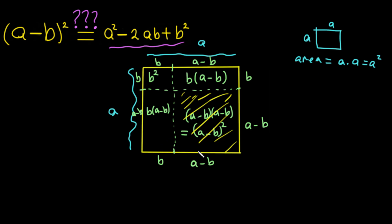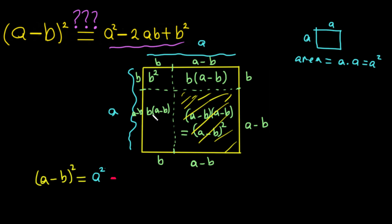Since we want only this smaller area — it's like a small part of the whole thing — we take the big area, which is a², and subtract the other three parts: one, two, three. If we subtract them we get the area of the region we want. So (a minus b)² equals a² minus those three parts.